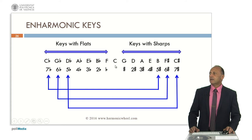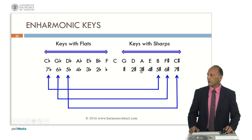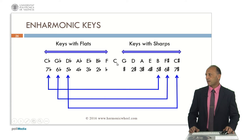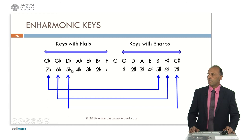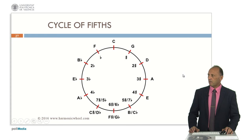We can represent all the keys along with their accidentals, as we can see here. The keys with flats are F and other notes with flats, and the keys with sharps are natural notes except C and F, and some notes with sharps. Here we can see that there are some enharmonic keys: C-flat major containing seven flats is enharmonic to B major containing five sharps; G-flat major containing six flats is enharmonic to F-sharp major containing six sharps; and D-flat major containing five flats is enharmonic to C-sharp major containing seven sharps. We can represent all the keys in the so-called cycle of fifths, and at the bottom part we have the enharmonic keys.